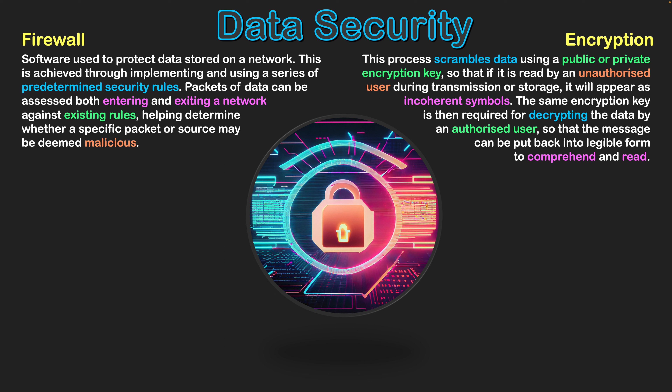Essentially the information turns into incoherent signals, so if an unauthorized user looks at the data it won't make sense — it's just scrambled. The same encryption key then needs to be used for the decryption process, which is the reverse process of turning the scrambled data back into a readable form, so that an authorized user who has the public or private encryption key can then read and comprehend the message.